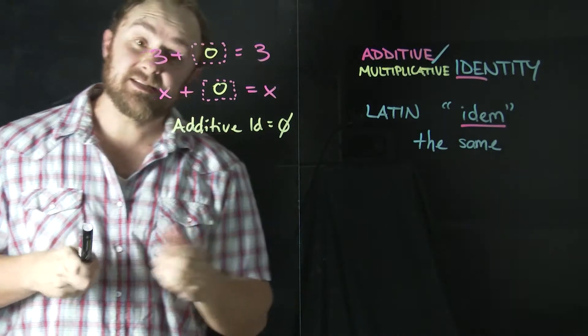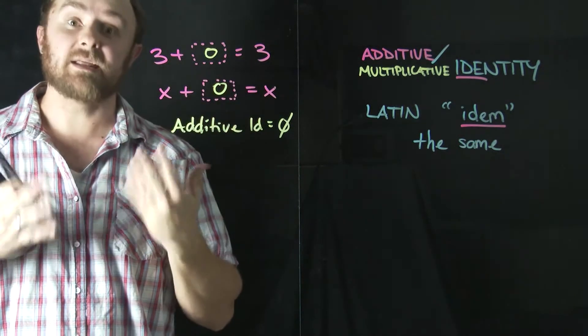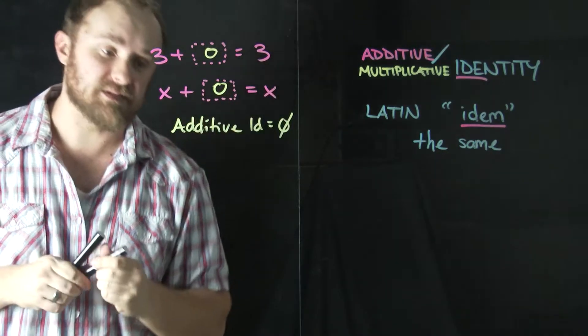Now when we look at multiplication, it's different because if I multiply a number by zero, it's always zero. Anything times zero is zero. So the multiplicative identity can't be zero.